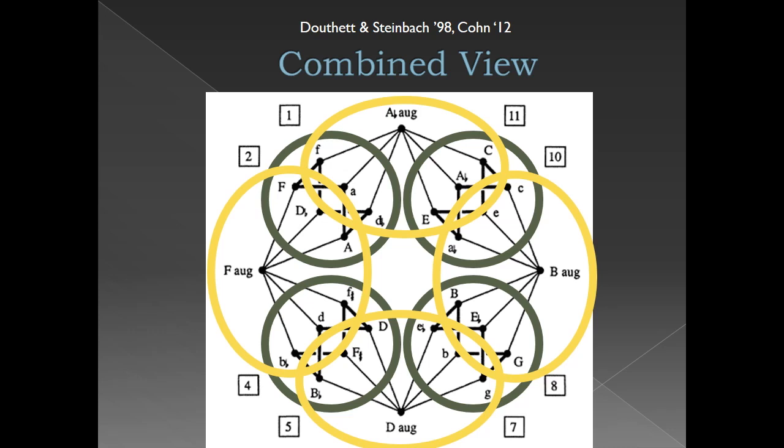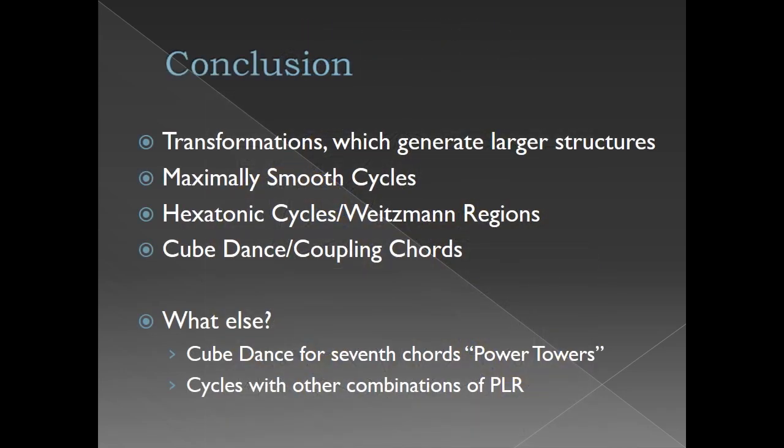In conclusion, let us remember that Neo-Riemannian theory begins with transformations such as P, L, and R. There are many more cycles that can be derived from P, L, and R, such as the octatonic cycle or PR cycle. Some other topics that expand on those covered today include a model similar to the cube dance that works for seventh chords, known as the power towers.